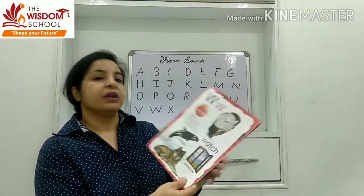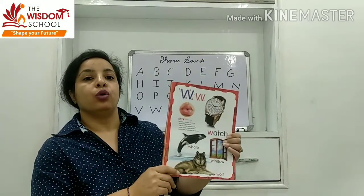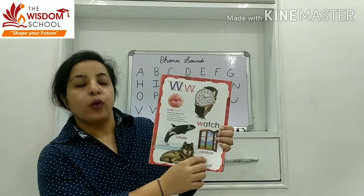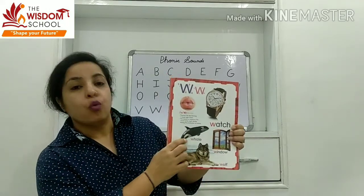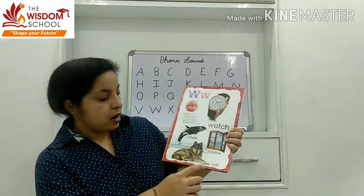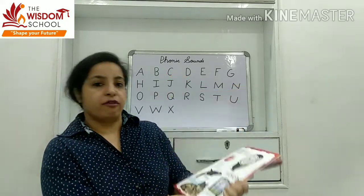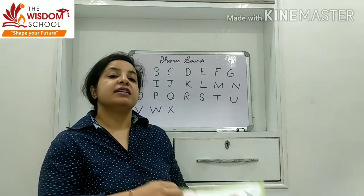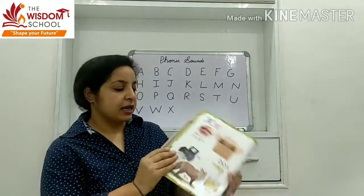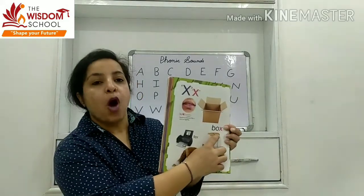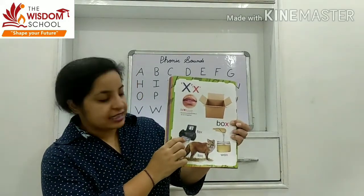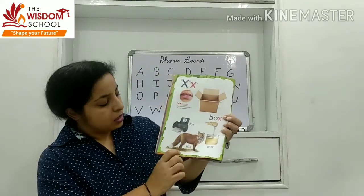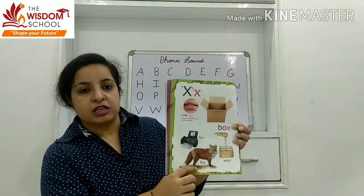W — watch, window, whale, wolf. X — axe, box, fax, wax, fox. Clear?